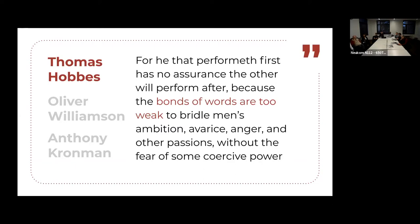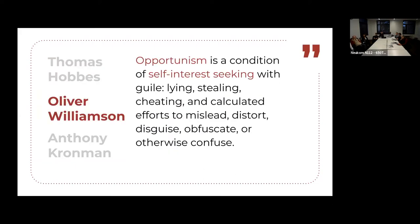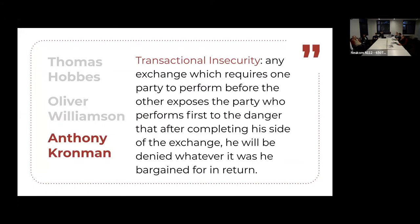Oliver Williamson built on this point. He called this an example of opportunism, or self-interest seeking with guile. And then Anthony Cronman, going back to Hobbes, labeled this situation transactional insecurity. We kind of know that this is a societal problem that we need to solve, and it's traditionally been solved by legal contracts or the legal system.